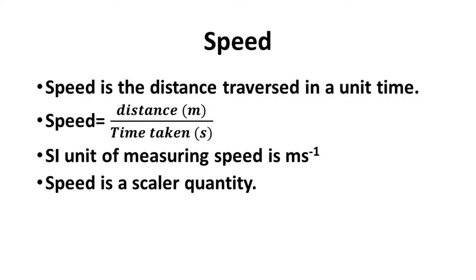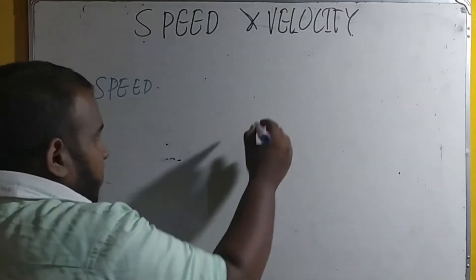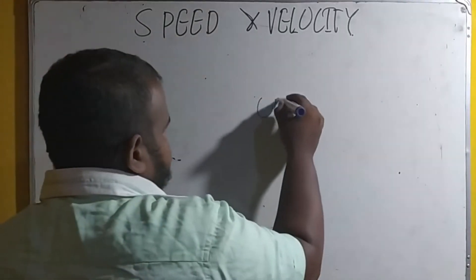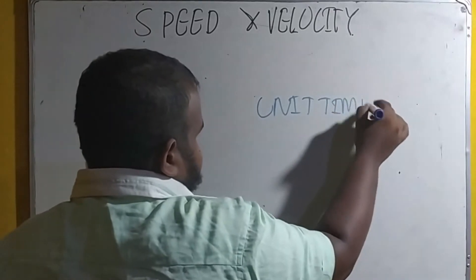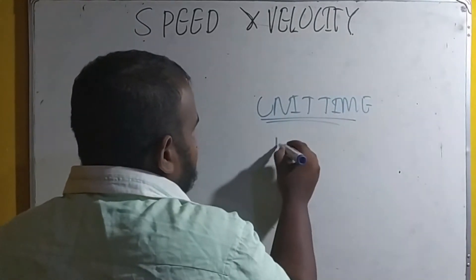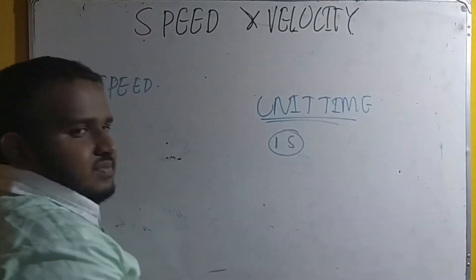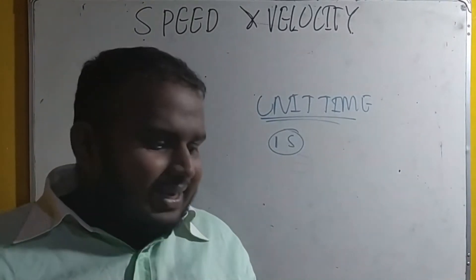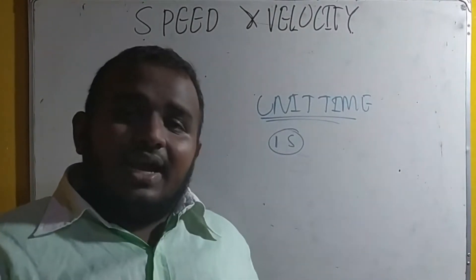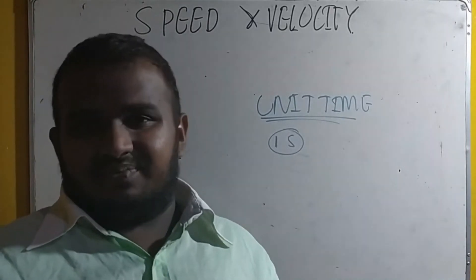Speed is a scalar quantity. Whenever you get the term unit time, it means one second. That means how much distance an object traveled in one second.